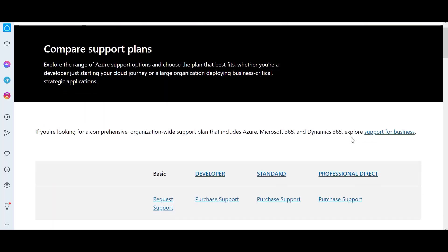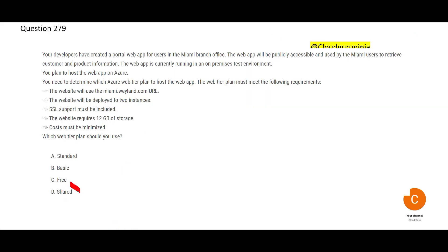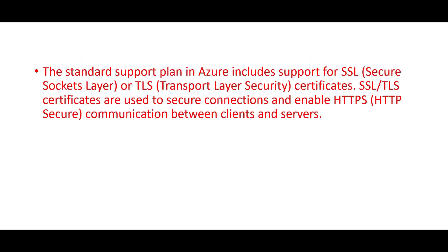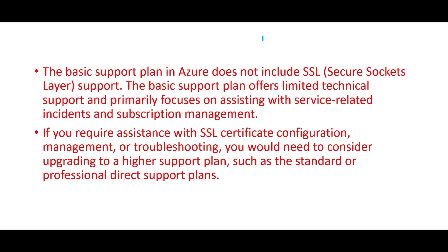Now let us look at the next question about support plans. You have Basic, Developer, Standard, and Professional Direct plans — 'Shared' and 'Free' are not plans. If you need SSL support and 12 GB storage, Basic would not help with those things — Basic is a very basic plan. You have to go to Standard; that is common sense. The Standard support plan is your final answer, as it includes support for SSL — Secured Socket Layer.